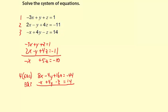Now add. 8x minus x is 7x, negative 4y plus 4y is 0, 16z minus z is 15z, and negative 44 plus 14 is negative 30. Here are my two equations with two variables, and I'm going to use them to solve for x and z.